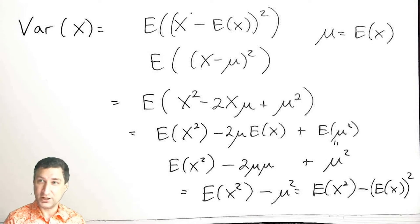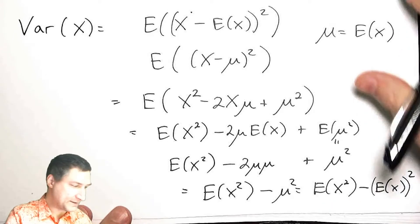Otherwise, every random variable would have variance 0. That's a common beginning probability mistake, to compute that this is the same as that, but it's not.